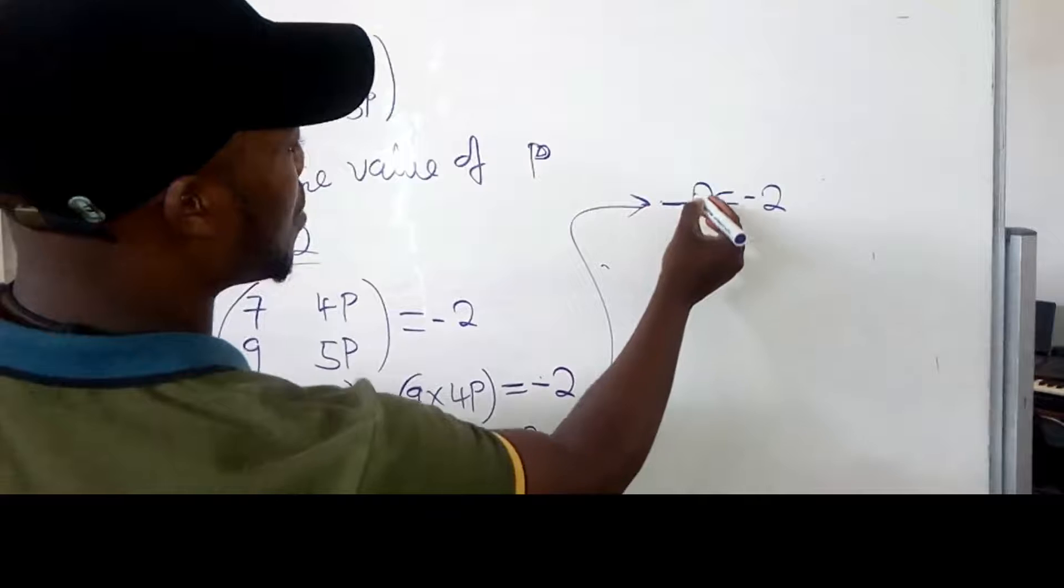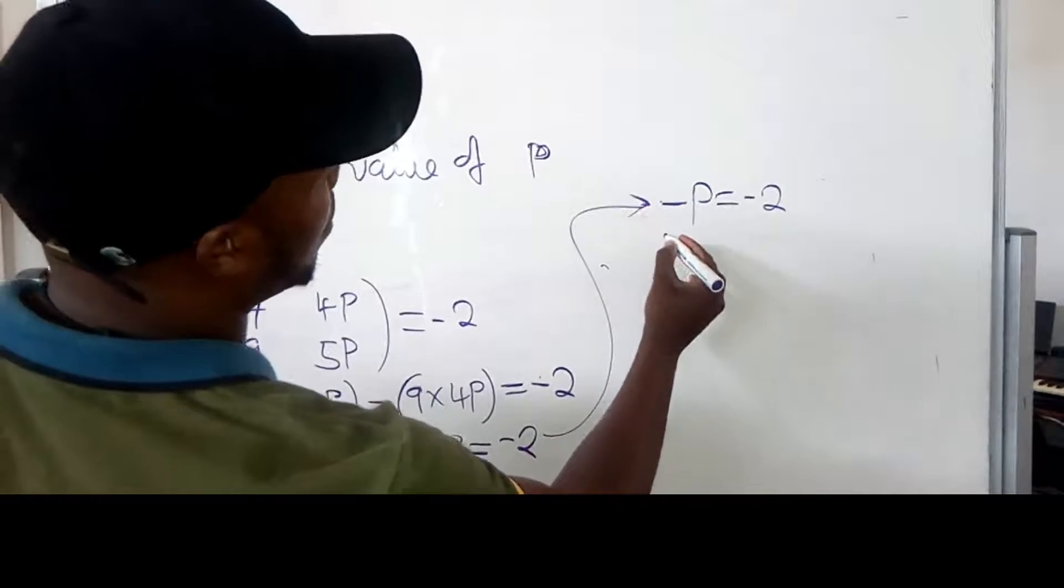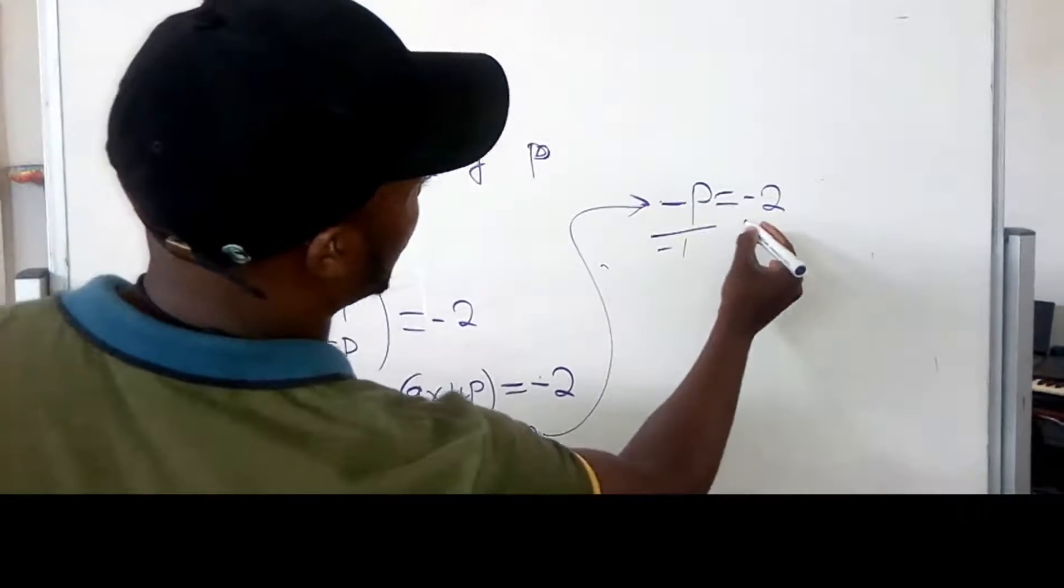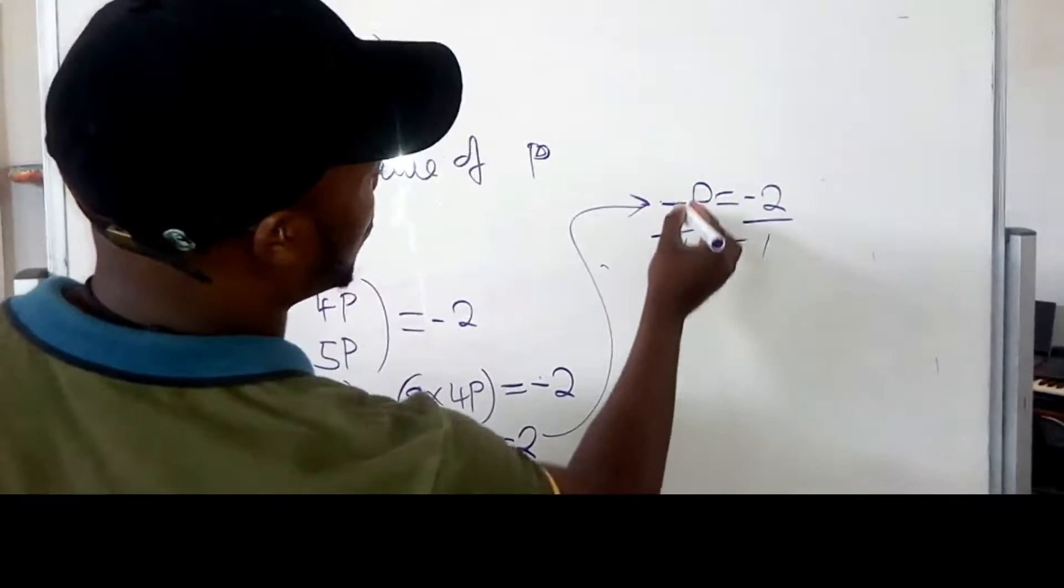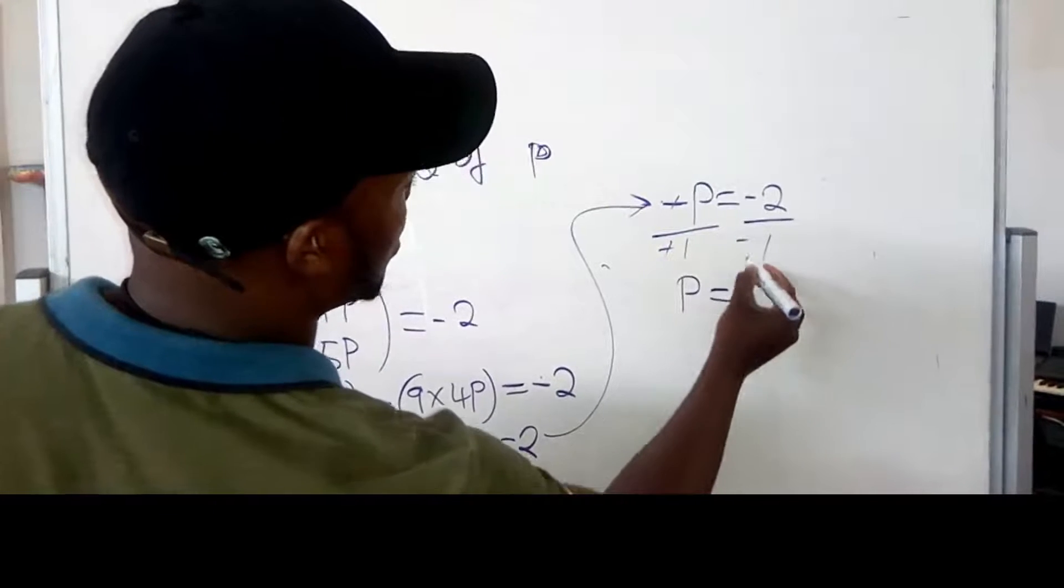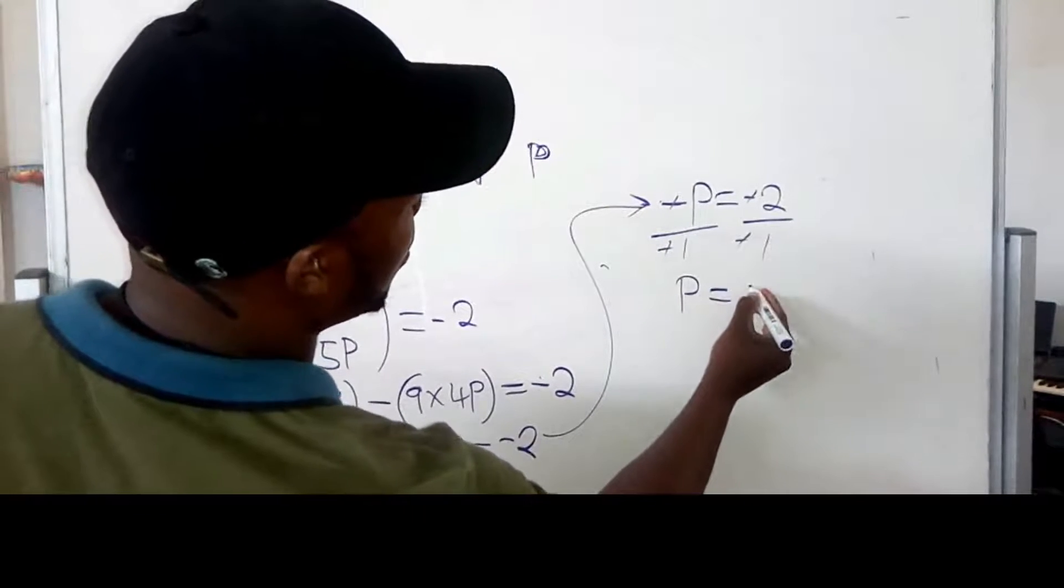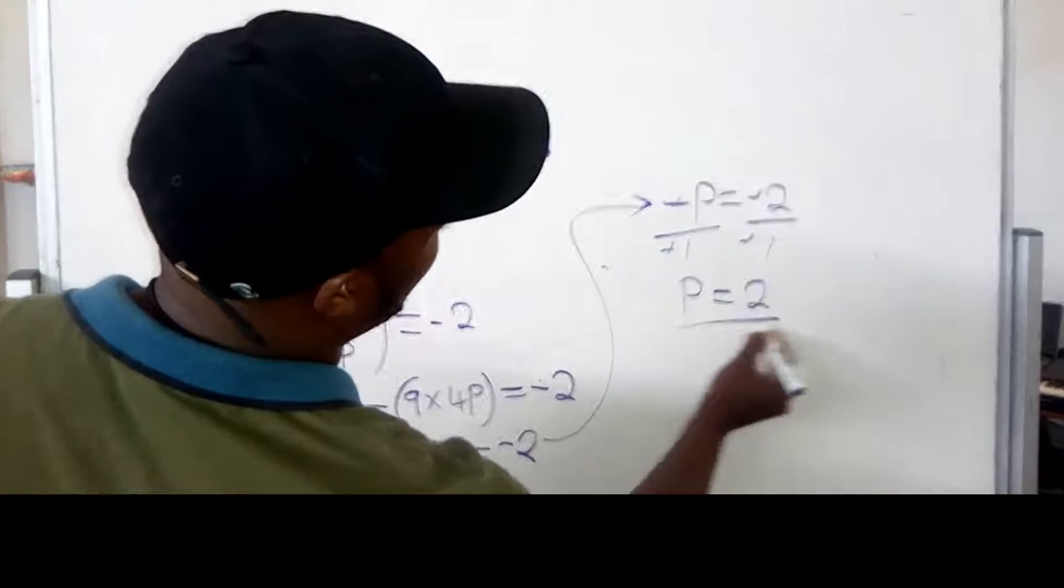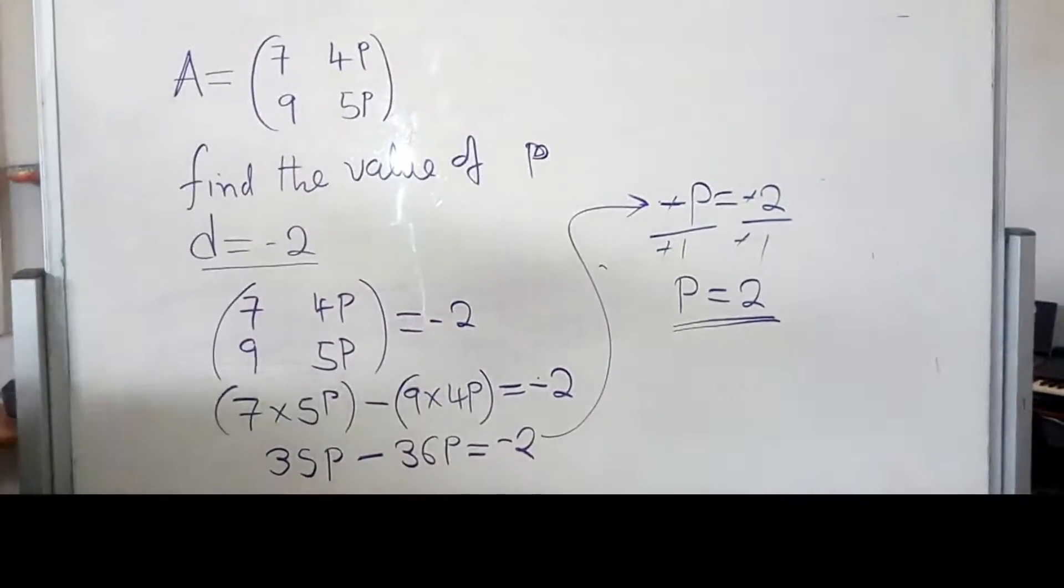Since we have a negative, we need to get rid of this negative by dividing by negative 1. So, negative, negative will cancel. We remain with P inside. And the negative here, negative, will remain with 2. So, the value of P is 2.